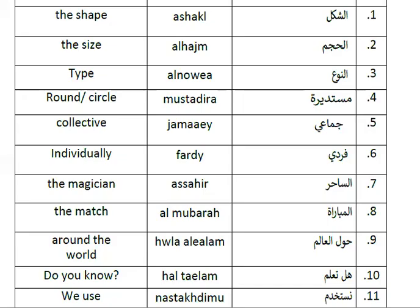Our next word is Oval. For oval shape, we have Al-Baidaviyyun. Al-Baidaviyyun means oval in shape, like a rugby ball. Then we have Al-Mubaratu, which means the match. We also have Al-Shakla. Al-Shakla means the shape of the ball — or simply, the shape.